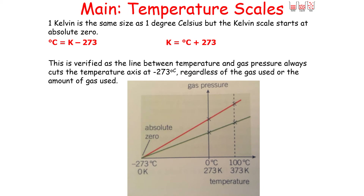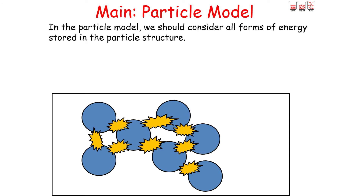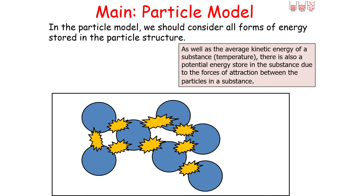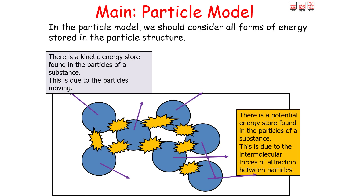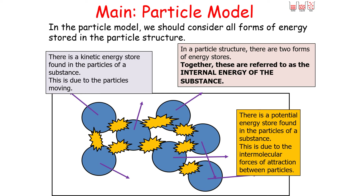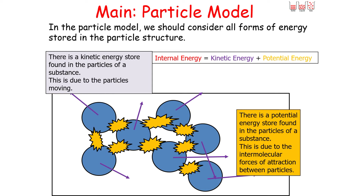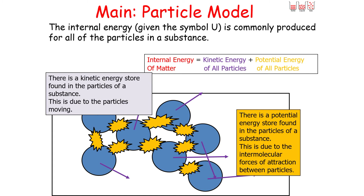In the particle model, we should consider all forms of energy stored in a particle structure. As well as the average kinetic energy of a substance — which links to temperature — there is also a potential energy store due to the forces of attraction between particles, specifically the intermolecular forces of attraction. There is also a kinetic energy store due to the particles moving. These two energy stores together are referred to as the internal energy of the substance. So internal energy equals the kinetic energy store plus the potential energy store of all the particles in the substance.